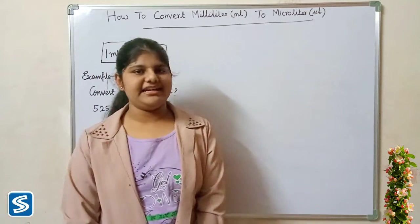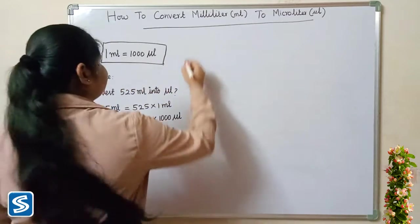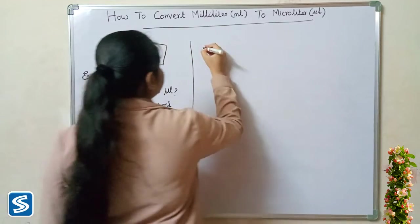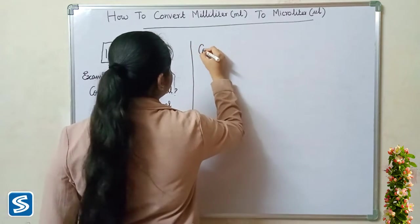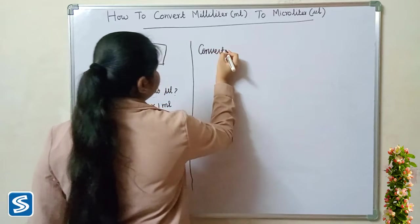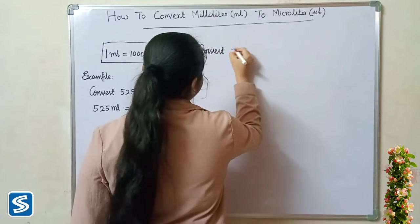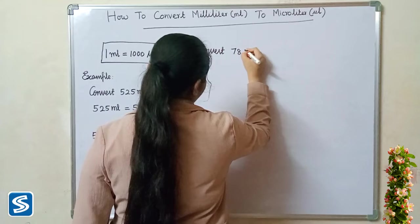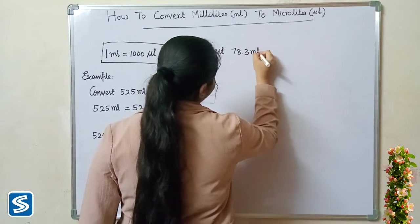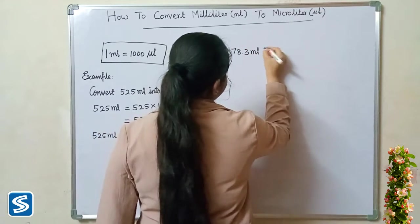Next we will take another example. Convert seventy eight point three milliliters into microliters.